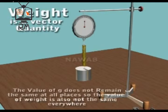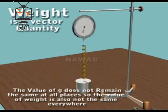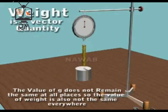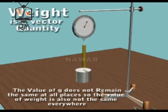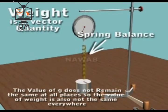As the value of gravitational acceleration G does not remain the same at all places, therefore the value of weight is also not the same everywhere. Like mass, the weight of a body cannot be measured by an ordinary balance, but a spring balance is used to measure the weight.